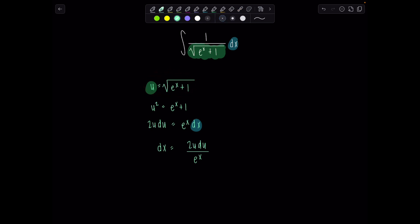And actually, you know what? Come right here after we squared. It's even better because then we can say, all right, e to the x is equal to u squared minus 1. Perfect. So then now I can say dx is 2u du over u squared minus 1.